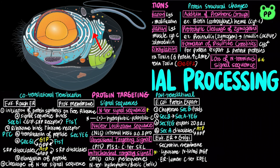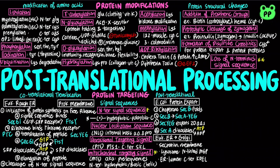Other proteins are synthesized in the cytosol by free ribosomes and are targeted to their respective locations by signal sequences, including NLS, PTS, and MTS. Finally, the last type of post-translational processing involves protein degradation, which prevents the buildup of abnormal or unwanted proteins and permits the recycling of amino acids.